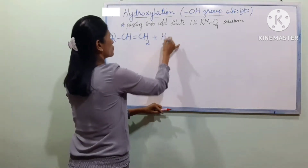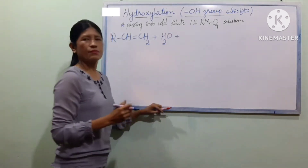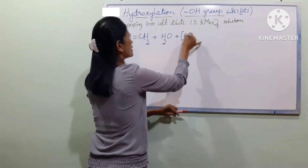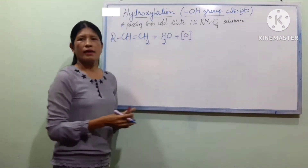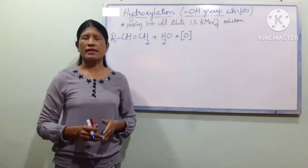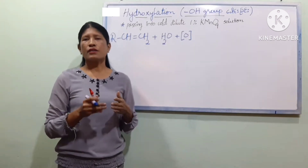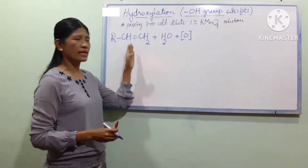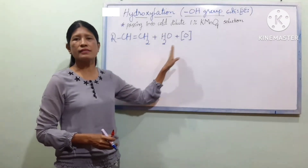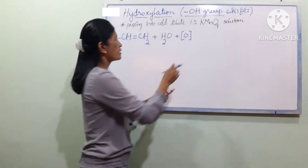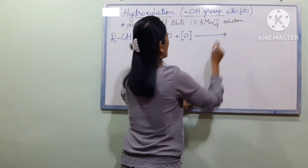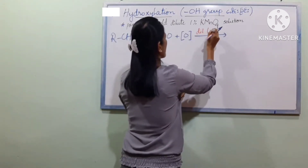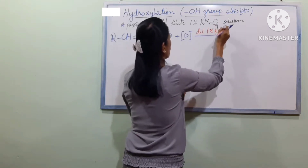We are going to talk about H2 and oxygen involved in the reaction. You can consider the line between the dilute 1% KMnO4 solution. We will talk about H2O and oxygen in this reaction.